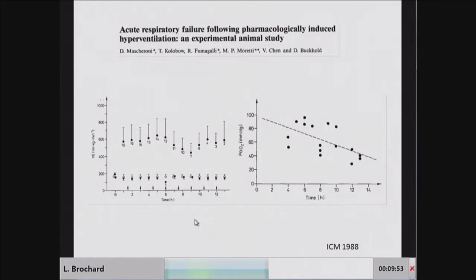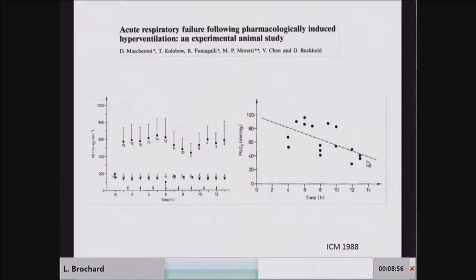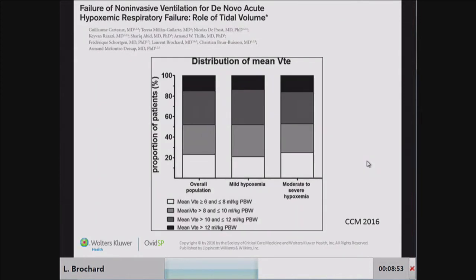Hyperventilation was induced pharmacologically by injecting salicylate acid directly into the brain, causing central acidosis and making the animals hyperventilate. They were compared to a control group that was paralyzed but kept acidotic — to exclude the effect of acidosis — and another group ventilated with corrected acidosis. In the spontaneously breathing animals, there was a progressive drop in oxygenation, and histology showed findings very similar to what was later called ventilator-induced lung injury. So it is definitely possible to induce lung injury through hyperventilation alone.